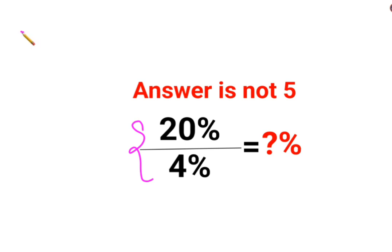Please understand whenever you have a percent sign ahead of a number, you can convert that number into a fraction by dividing it by 100. So 20% can be written as 20 upon 100 divided by 4% can be written as 4 upon 100.